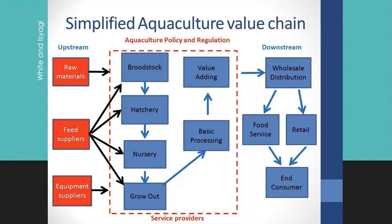One thing that was really difficult in this program was sourcing the fish. Phoenix is not a place where you'd normally expect to need fingerling catfish or fingerling tilapia. But all of these things — raw materials, feed, broodstock, hatchery, nursery, basic processing, value-adding, and wholesale distribution — are needed for one successful farm. This is an industry, and our villages are large enough that there could be community-based industries in each of these villages.